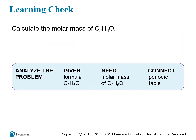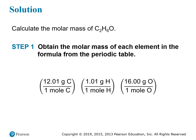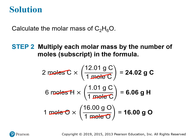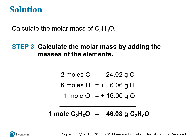Let's calculate the molar mass of ethanol, formula C2H6O. We begin by finding the individual masses of all elements: carbon is 12.01 grams per mole, hydrogen is 1.01 grams per mole, and oxygen is 16 grams per mole. There are 2 carbons: 2 × 12.01 = 24.02 grams. There are 6 hydrogens: 6 × 1.01 = 6.06 grams. There is 1 oxygen: 16 grams. Adding these together, the molar mass of ethanol is 46.08 grams per mole.